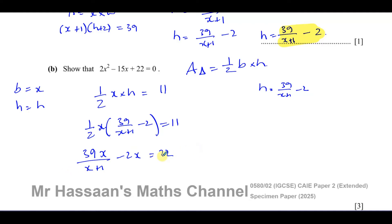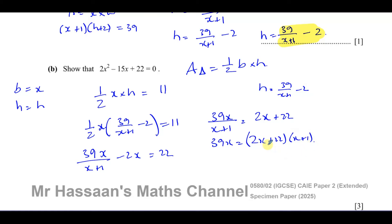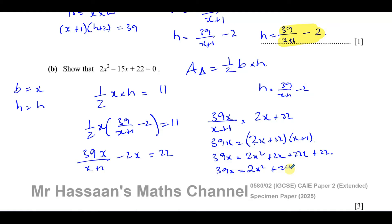Rearranging: 39x over (x plus 1) equals 2x plus 22. Multiplying both sides by (x plus 1) gives 39x equals (2x plus 22)(x plus 1). Expanding: 39x equals 2x² plus 2x plus 22x plus 22, which simplifies to 39x equals 2x² plus 24x plus 22. Subtracting 39x from both sides gives 2x² minus 15x plus 22 equals 0.